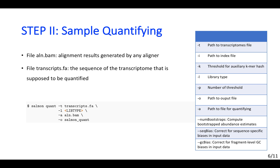The next step is sample quantifying. This could be performed with the salmon quant command. Generally, two types of files are needed here. The first one is the alignment results generated by any aligner you like. The second one is the sequence of the transcriptome that is supposed to be quantified.